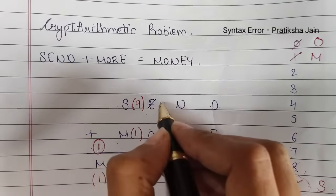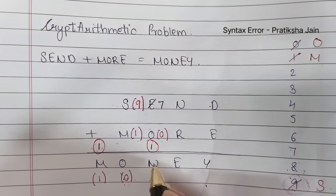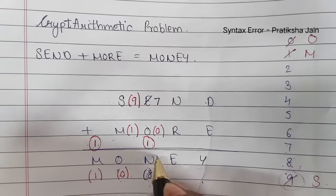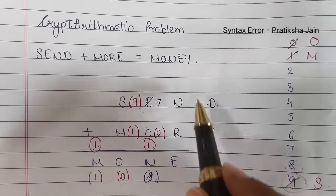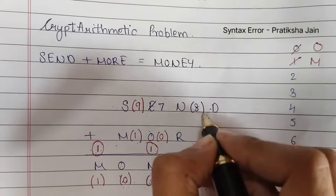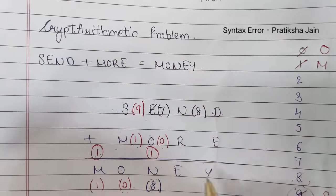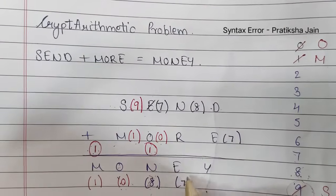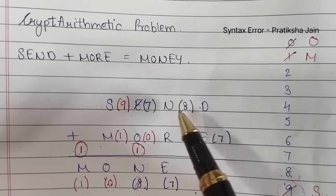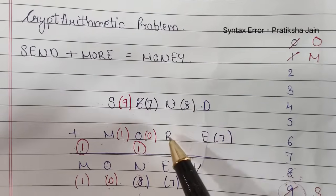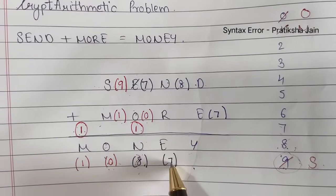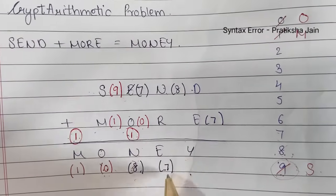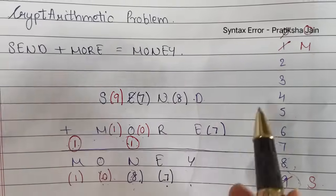So keeping E as 7 and 7 plus 1 is 8. 8 as N. So wherever there is N put 8. Let us put 8 over here and E as 7. Now the result of N plus R should be 7. Sorry, it should be 17. 1 and 7. 17. Now let's see if we get that thing.